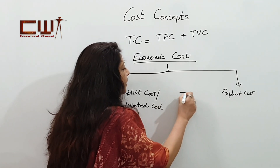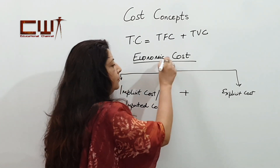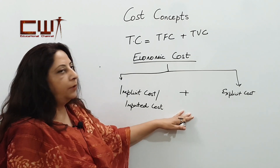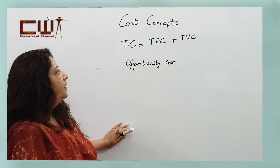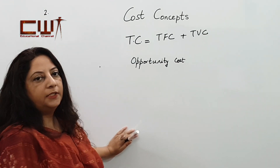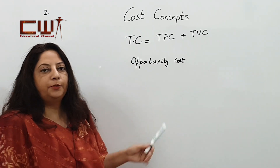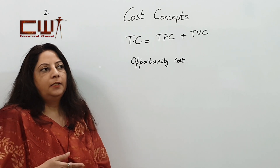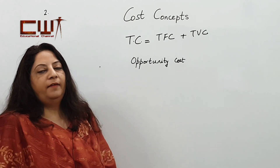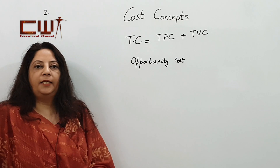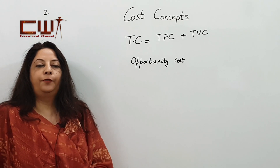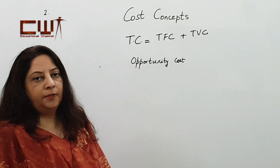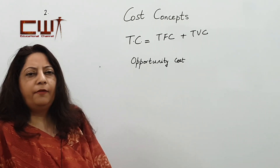When we add both implicit and explicit costs we arrive at the economic cost. The next concept under cost concepts is the opportunity cost concept. Opportunity cost is generally defined as the next best alternative which is foregone for making a certain product.